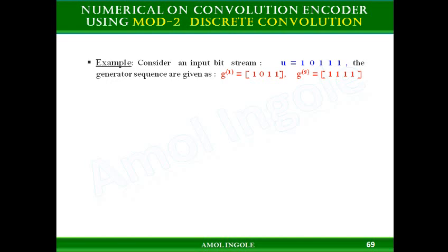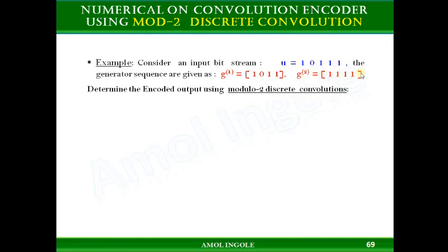To understand this properly, we will see a numerical example on convolution encoder using modulo-2 discrete convolution. Let us consider this example where the input bit stream is given as 10111, the generator sequences are given as g1 = 1011 and g2 = 1111. Determine the encoder output using modulo-2 discrete convolutions.